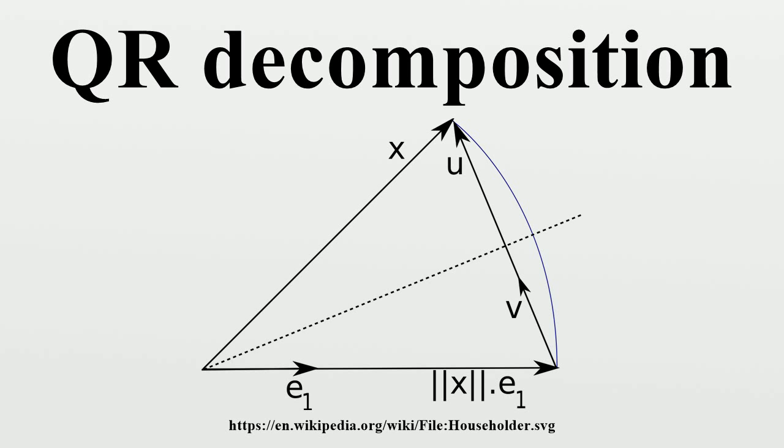Example: Consider the decomposition. Recall that an orthonormal matrix has the property. Then, we can calculate by means of Gram-Schmidt as follows. Thus, we have.